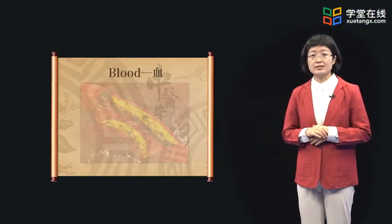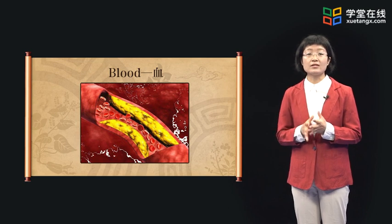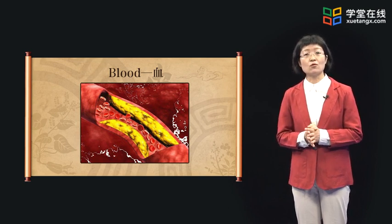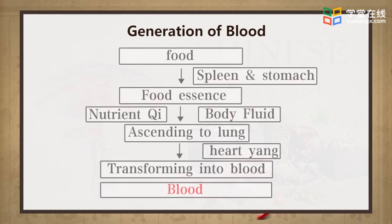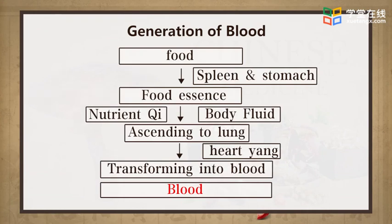Blood is the fluid circulating inside blood vessels, with the function of nourishing, and is also one of the basic materials to form and sustain life activities. Blood mainly consists of nutrient Qi and body fluid, both of which are transformed from food essence. Nutrient Qi and body fluid are transported to the heart and lung by the spleen. In the lung, nutrient Qi combines with clear Qi inhaled by the lung, perfusing vessels and transforming into red blood through the warming function of heart yang.